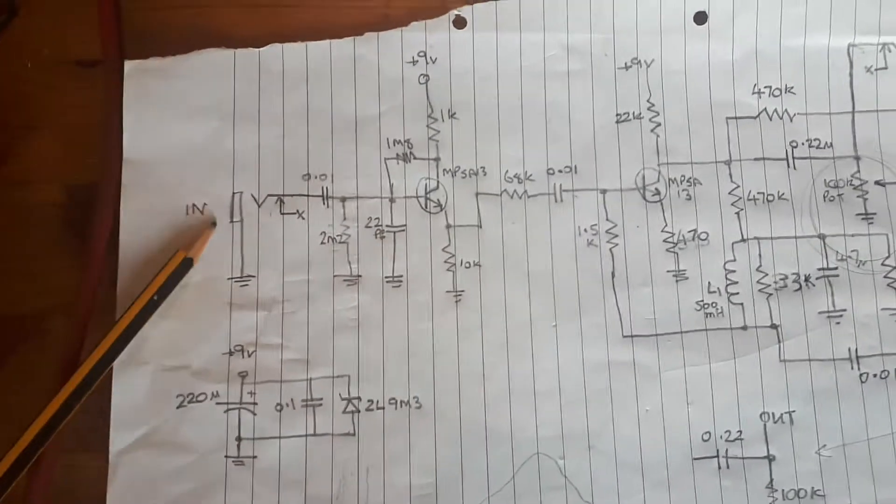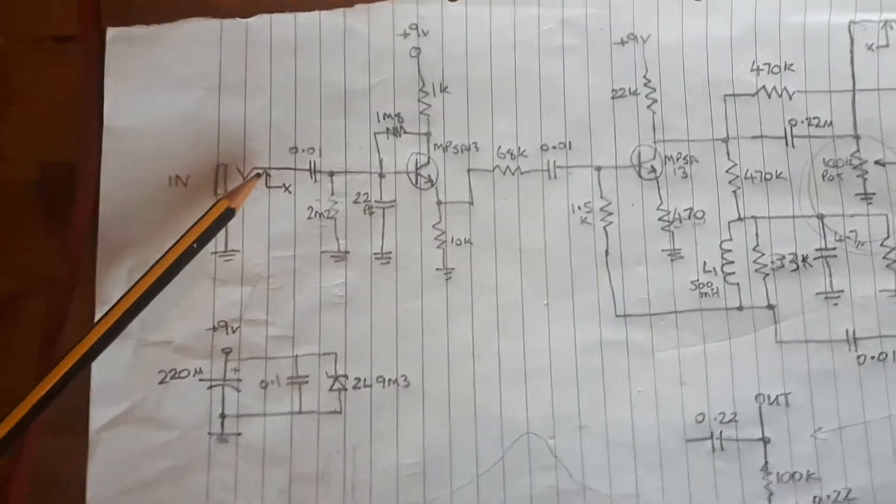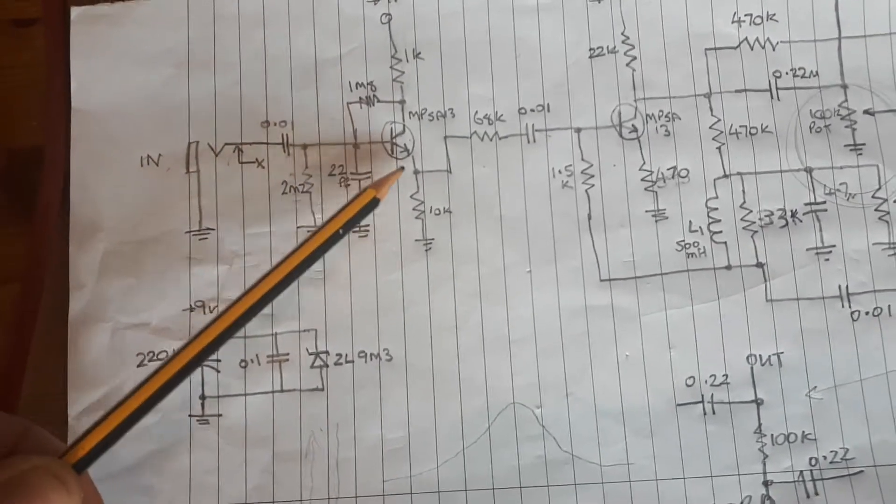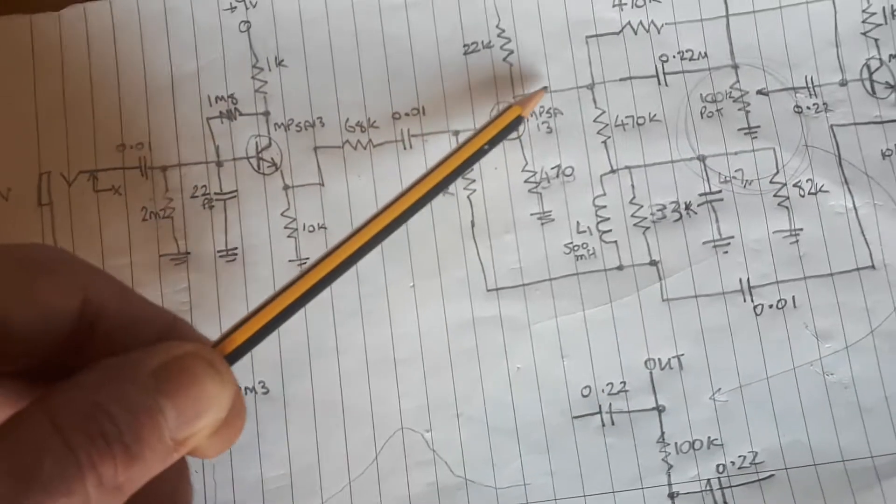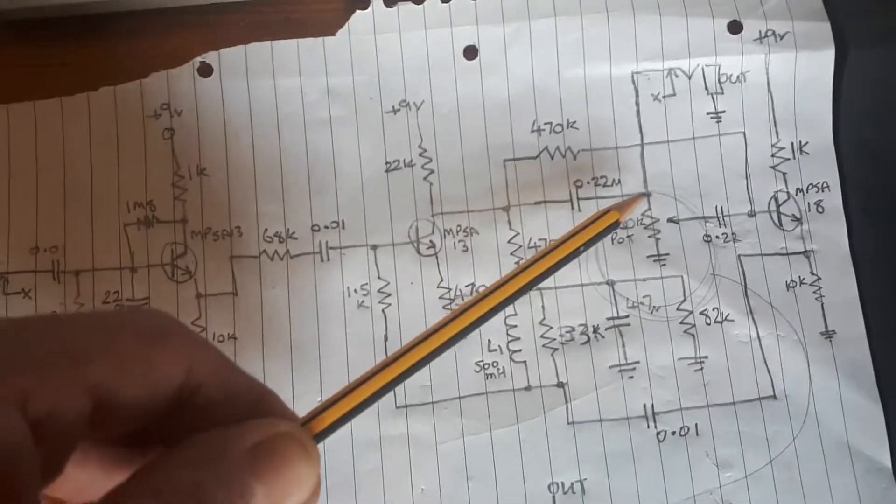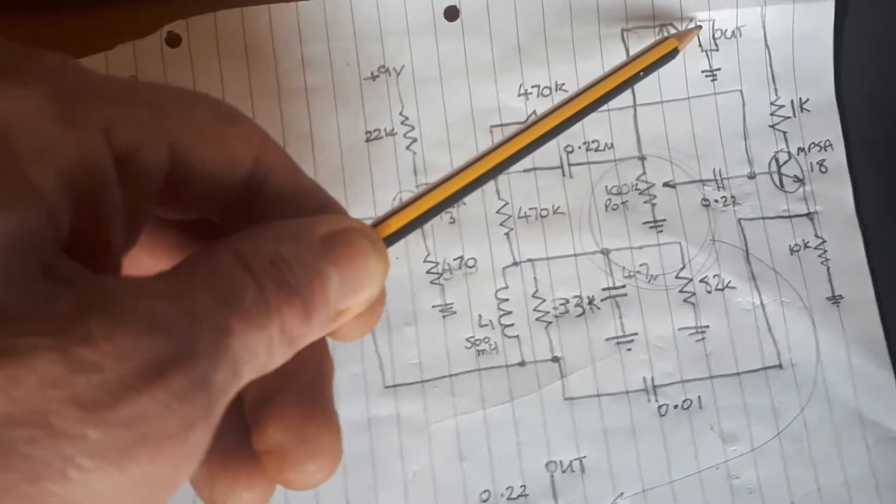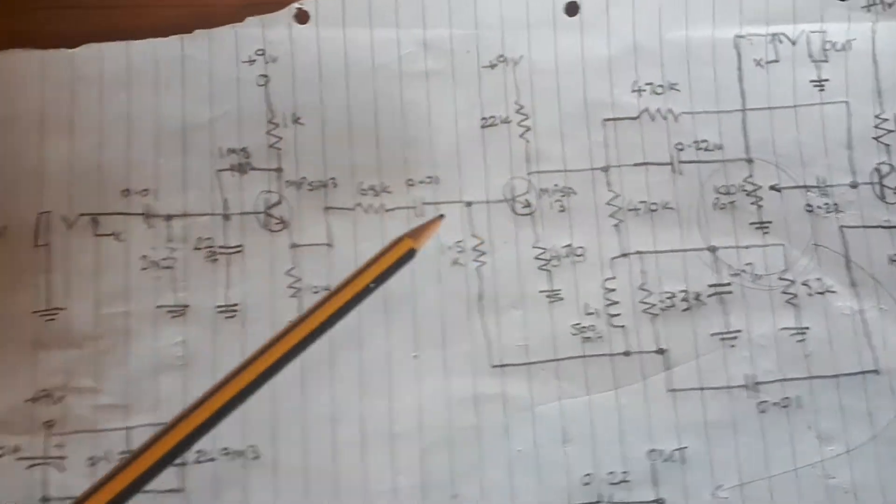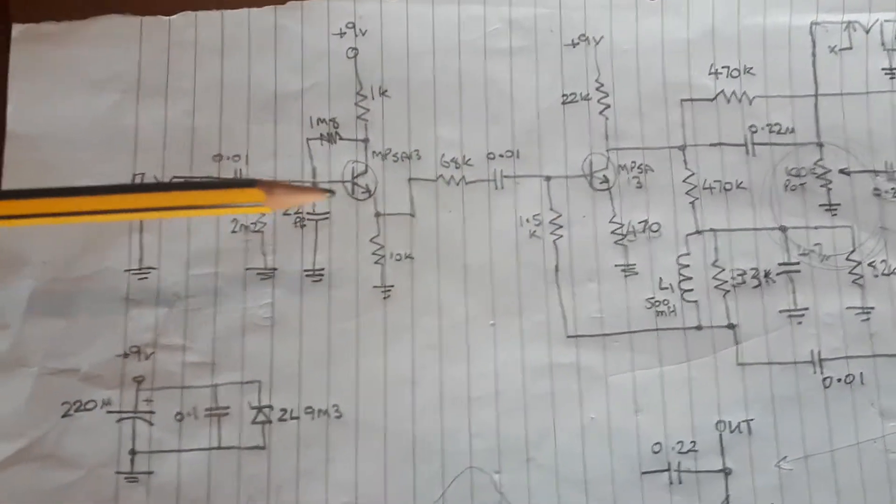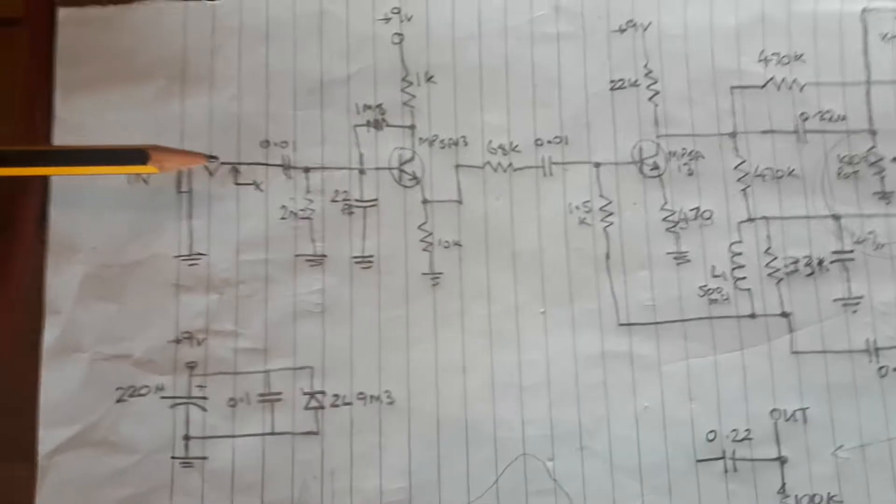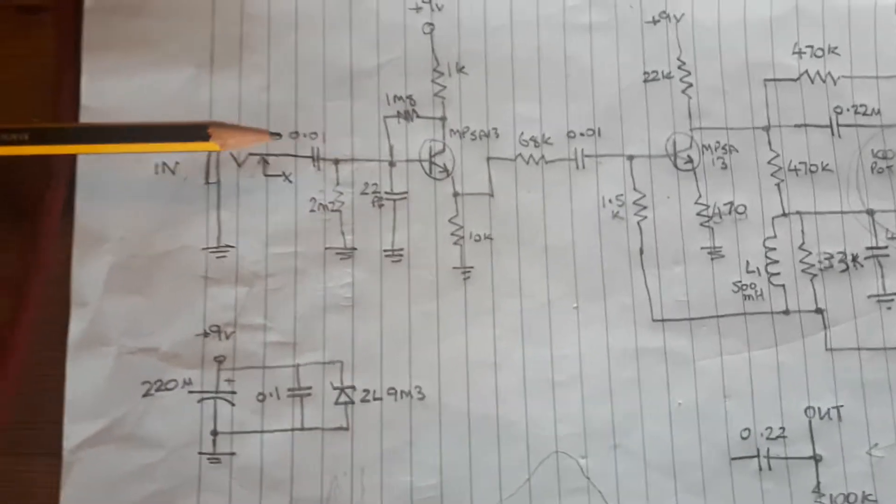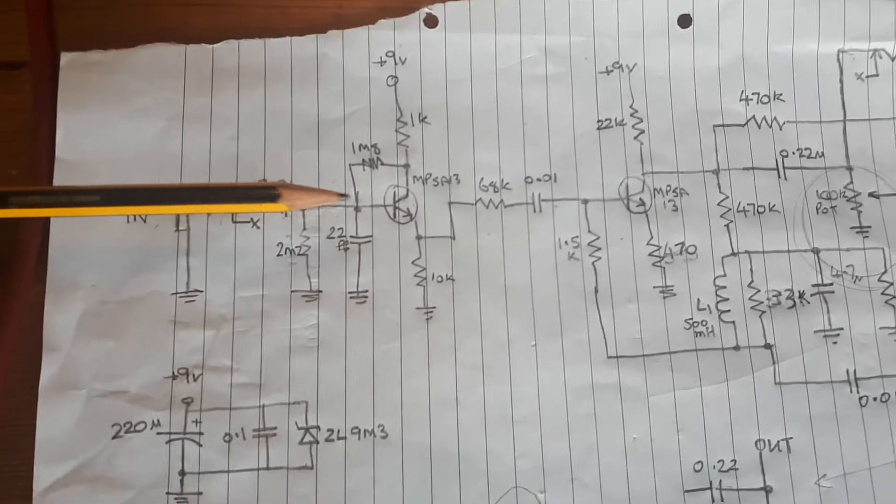Basically when you plug your guitar in, the signal from the guitar is passing through here and back out again to the amplifier. So there's your signal path coming in.